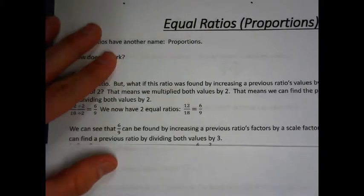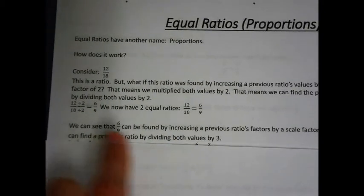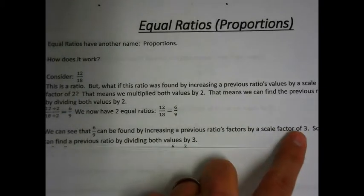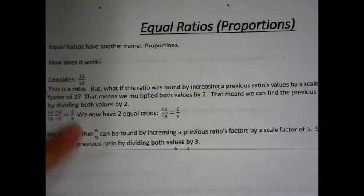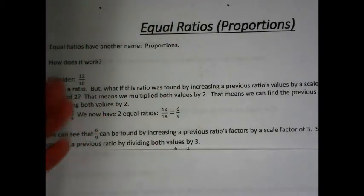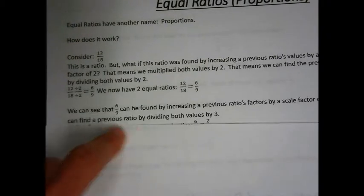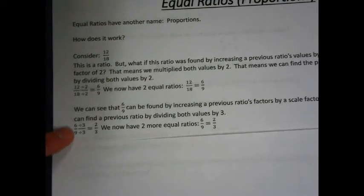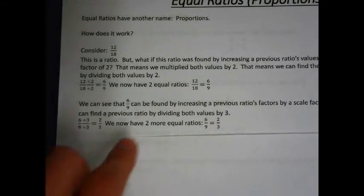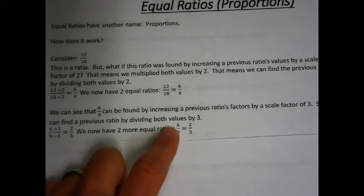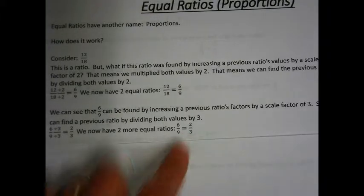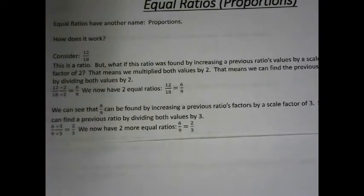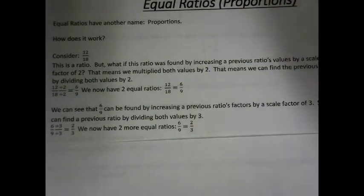Now here's something interesting. 6 to 9 can be found by increasing a previous ratio's numbers by a scale factor of 3. So we can find the previous ratio by dividing both of these values by 3 — both the numerator and denominator divided by 3. We end up with 2 thirds. So now we have 2 more equal ratios: 6 to 9 equals 2 to 3. We have equal ratios, this is a proportion. So 2 equal ratios is a proportion.